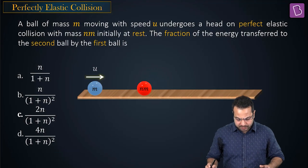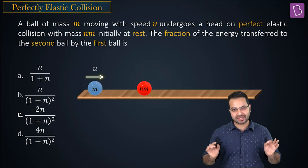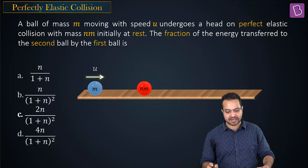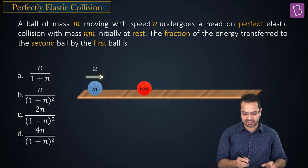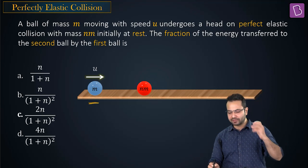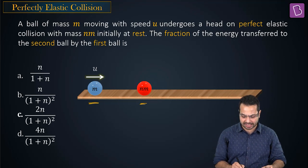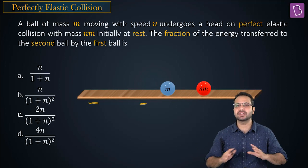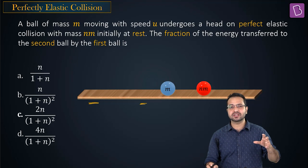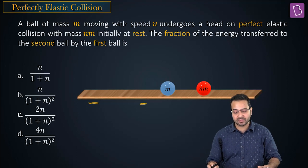A ball of mass m moving with speed u undergoes a head-on perfectly elastic collision with a ball of mass nm, initially at rest. The fraction of energy transferred to the second ball by the first ball is required. After the collision, both balls are moving with some velocities.